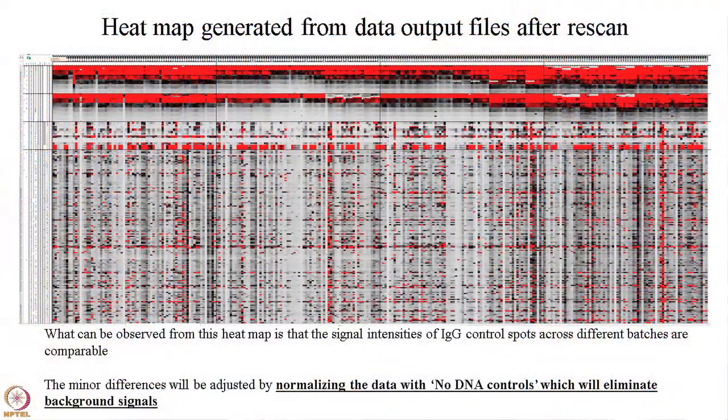After rescanning all slides, the signal intensities look more uniform overall, though batch 2 set 1 is still slightly higher than the rest. This remaining variation will be corrected by normalization, so we proceed with normalization using Excel.